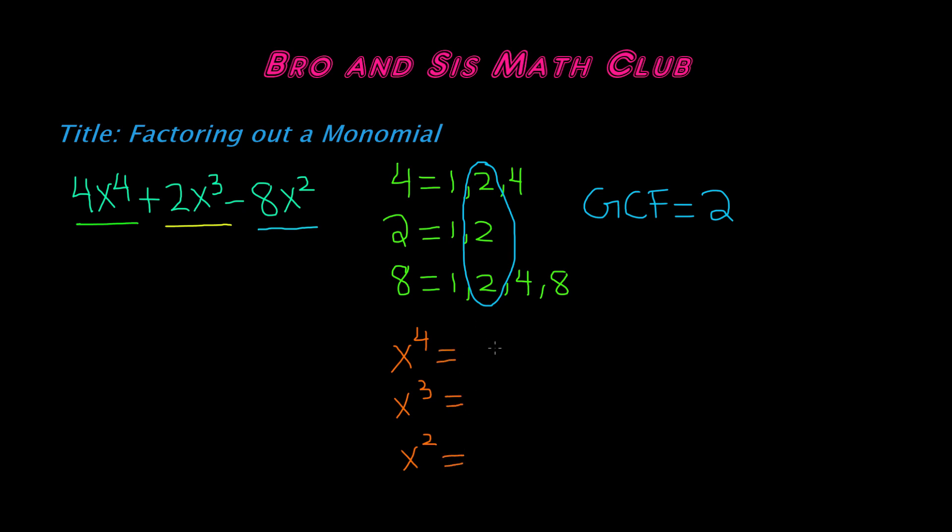So we know that each of these really basically has one factor, which is x. Because if you multiply x 4 times, you're going to get x to the 4th. If you multiply it 3 times, you get x cubed, or x to the 3rd. And if you multiply it twice, you get x to the 2nd power, or x squared. So the GCF of the variables is just simply x.